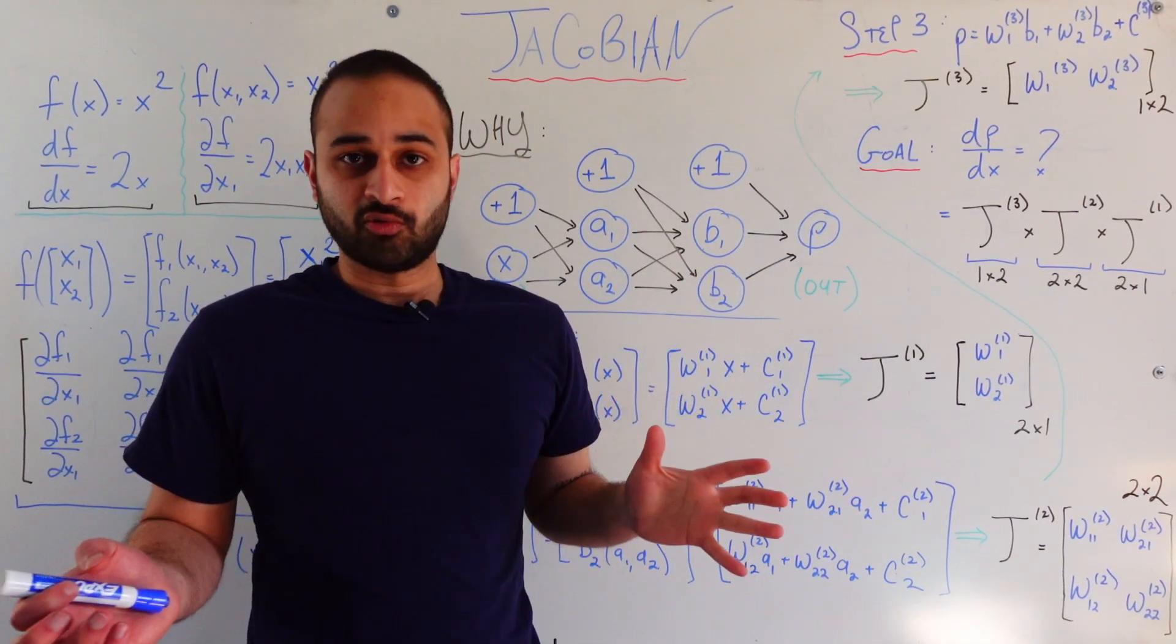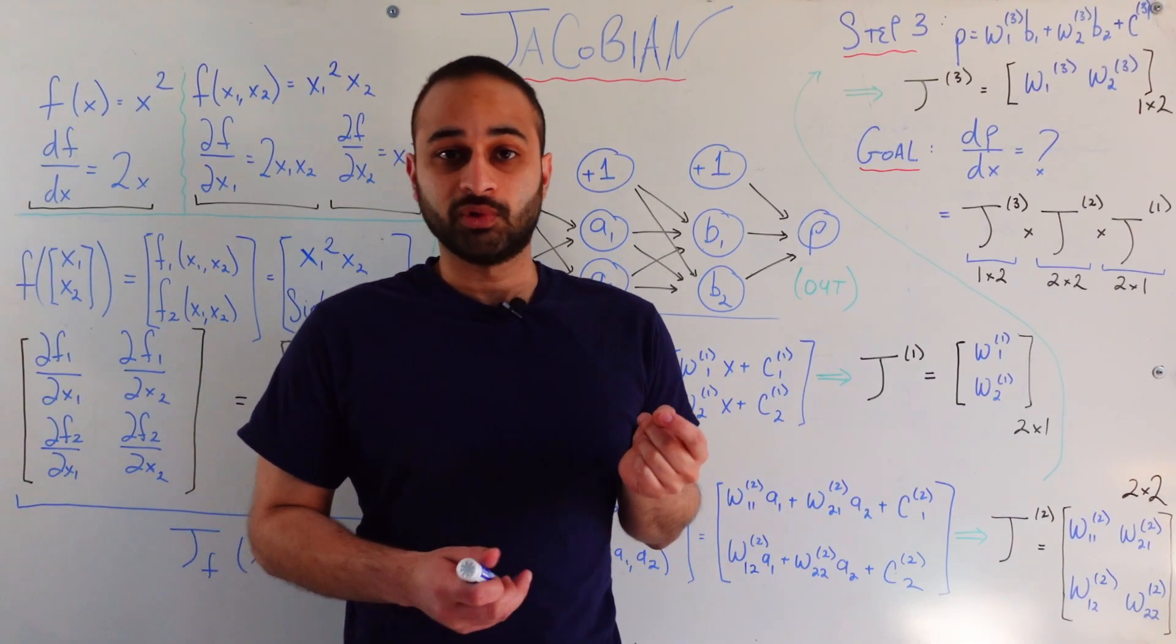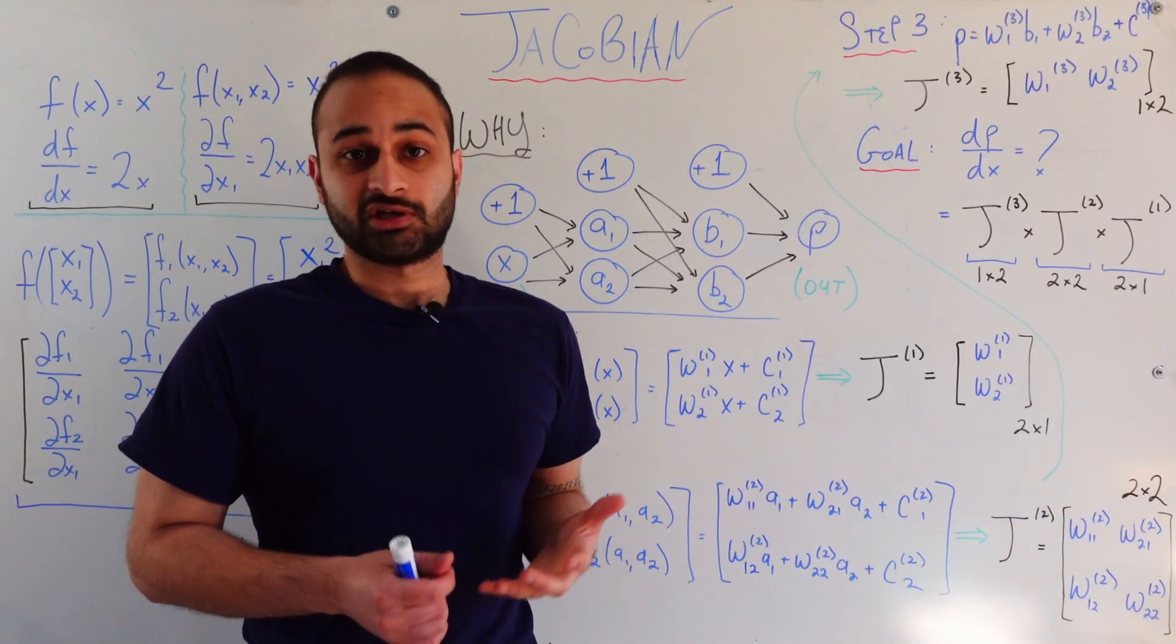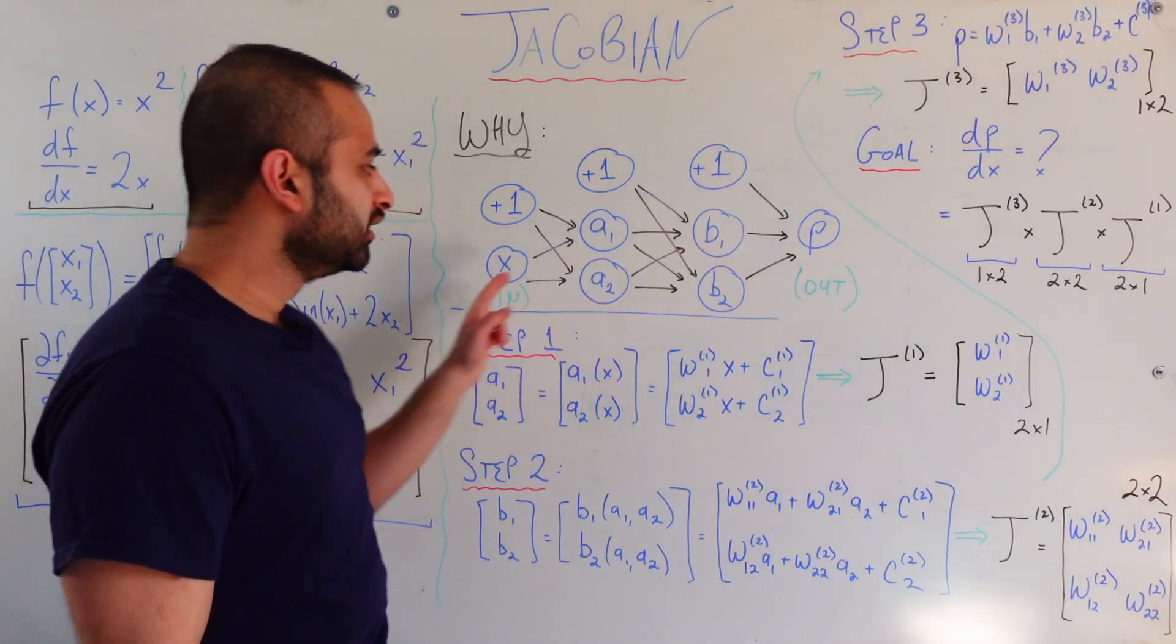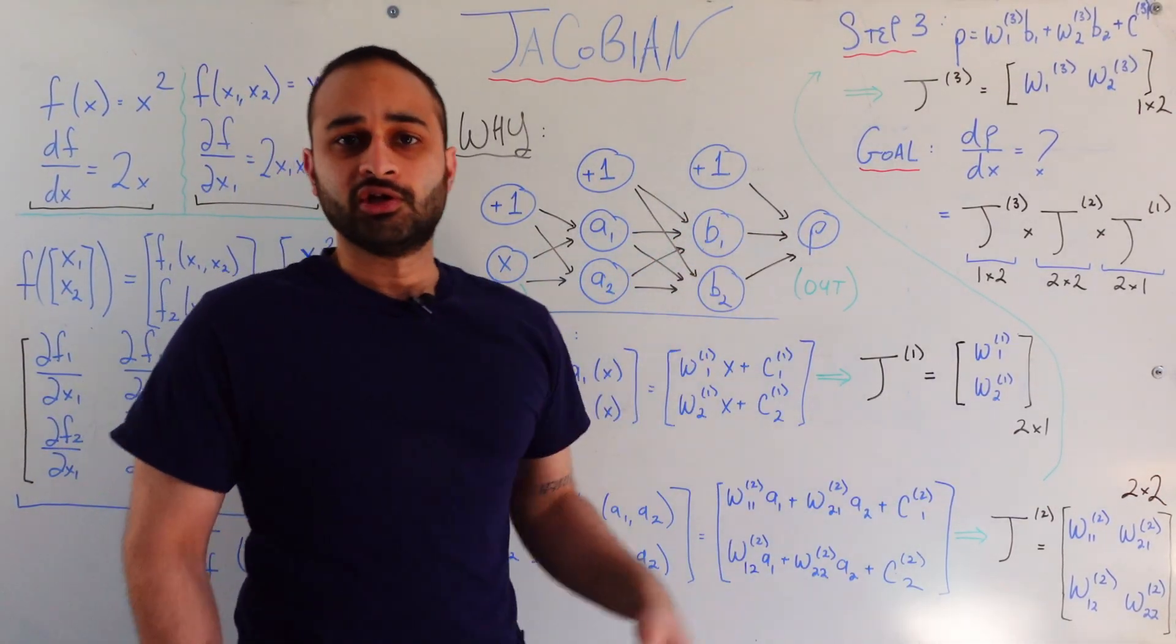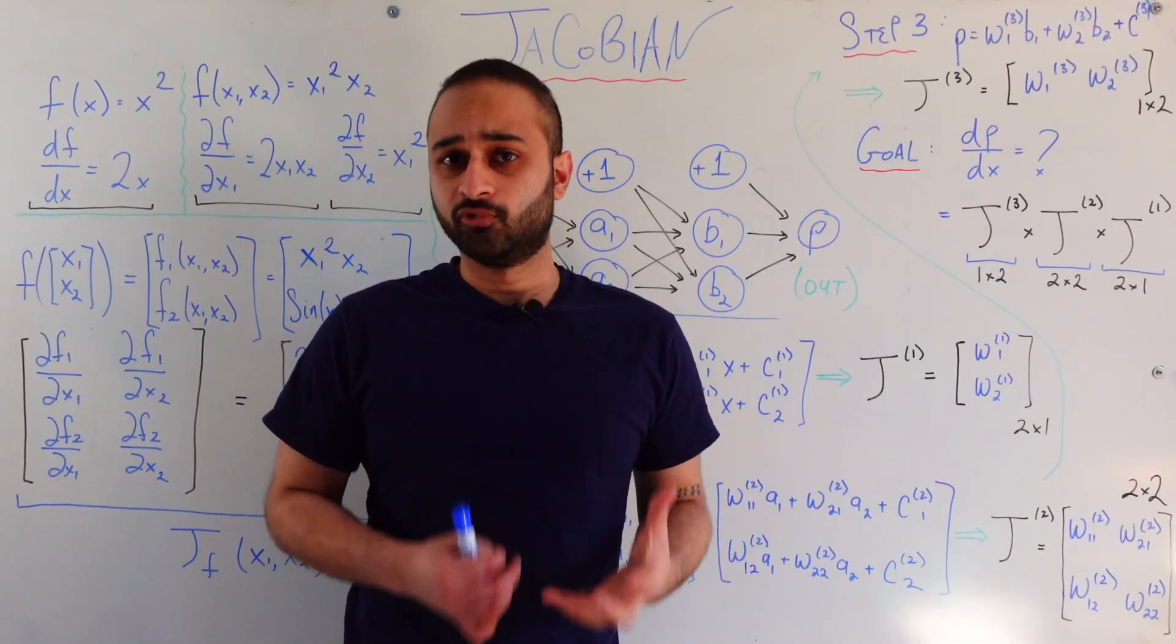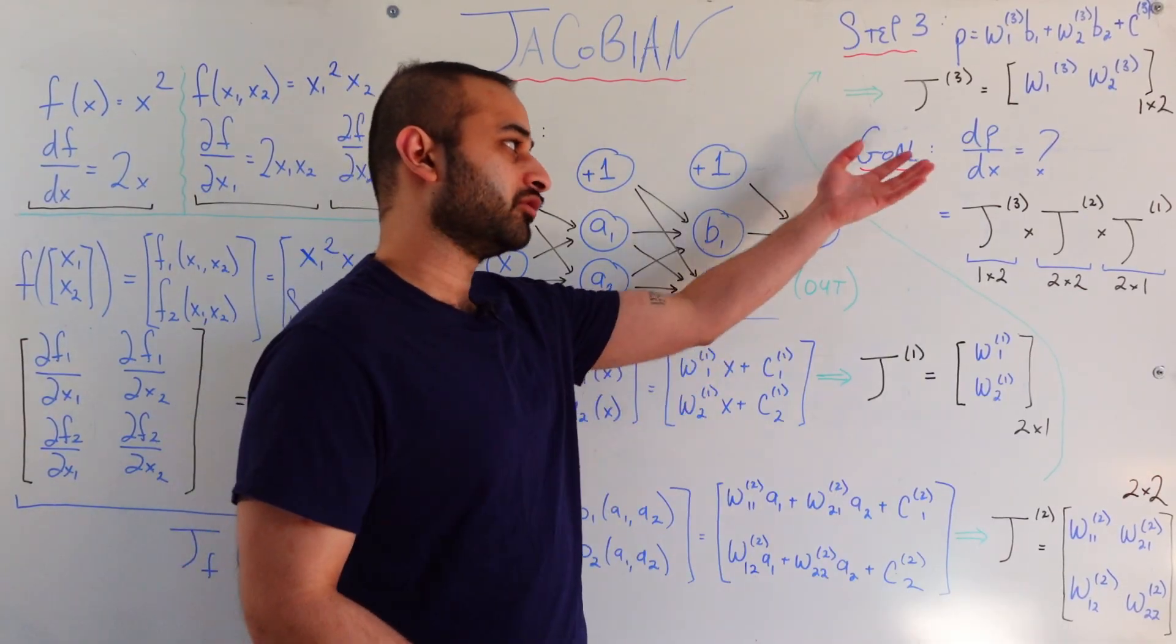Now if we weren't using Jacobians, if we were trying to do this by hand, it could get a little bit cumbersome and a little bit messy. Because we have to think about every possible path there is to get from x to our final output, p. And in this case, there's four paths, which isn't a lot. So explicitly those four paths are going to a1, then b1, then p, a1 to b2, then p, a2 to b1, then p, or a2 to b2 to p. So there's four paths. But you can imagine as your network gets longer, and as you get more nodes in each layer, there's going to be many, many paths. It's going to be really hard to keep track of all that. And then we have to add up the results of those derivatives together in order to get our final result.